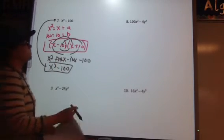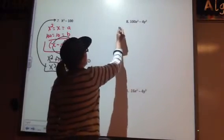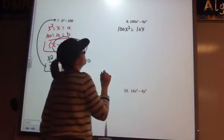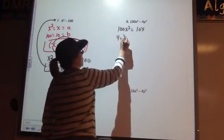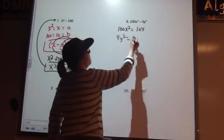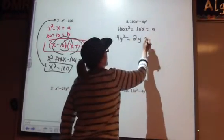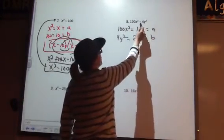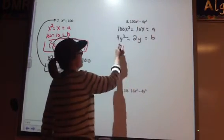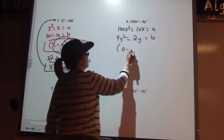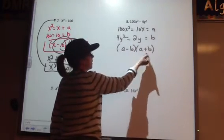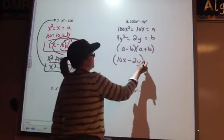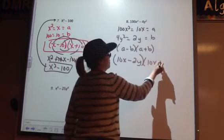All right, so let's look at 8 over here. So for a, I have 100x squared. Is that a perfect square? Yep. 10x. For b, I have 4y squared. Is that a perfect square? 2y. So here's my a, and here's my b. All right, so we start with the binomial. We have 2 perfect squares. That is a negative. Therefore, I can use this formula. So I have 10x minus 2y, and then I have 10x plus 2y. There's my answer.